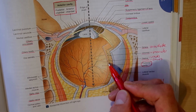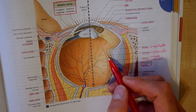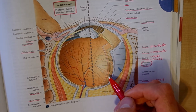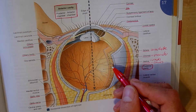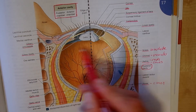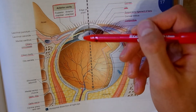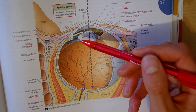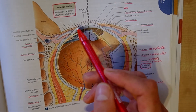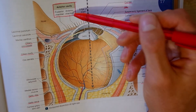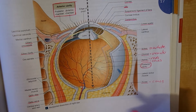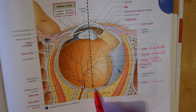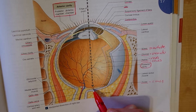Beneath the choroid we've got our retina. The retina is where our rods and cones are housed — the cells that detect light and color. Rods detect light and cones detect colors. The posterior cavity is at the back of the eye, and the anterior cavity is divided into the posterior chamber and anterior chamber — don't get confused between chambers and cavities. Right at the back of the eye we've got the fovea, which contains a highly concentrated amount of cones and this is where light will be focused.